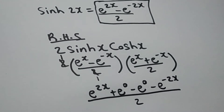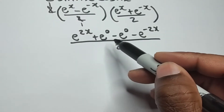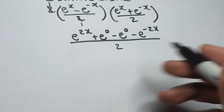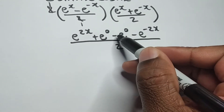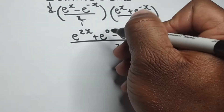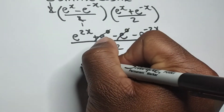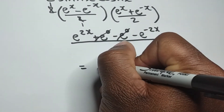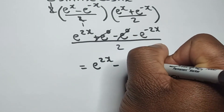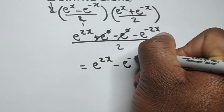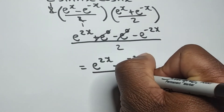Now we simplify. We can see that positive e to the 0 cancels out minus e to the 0. What we're left with is e to the 2x minus e to the minus 2x over 2.